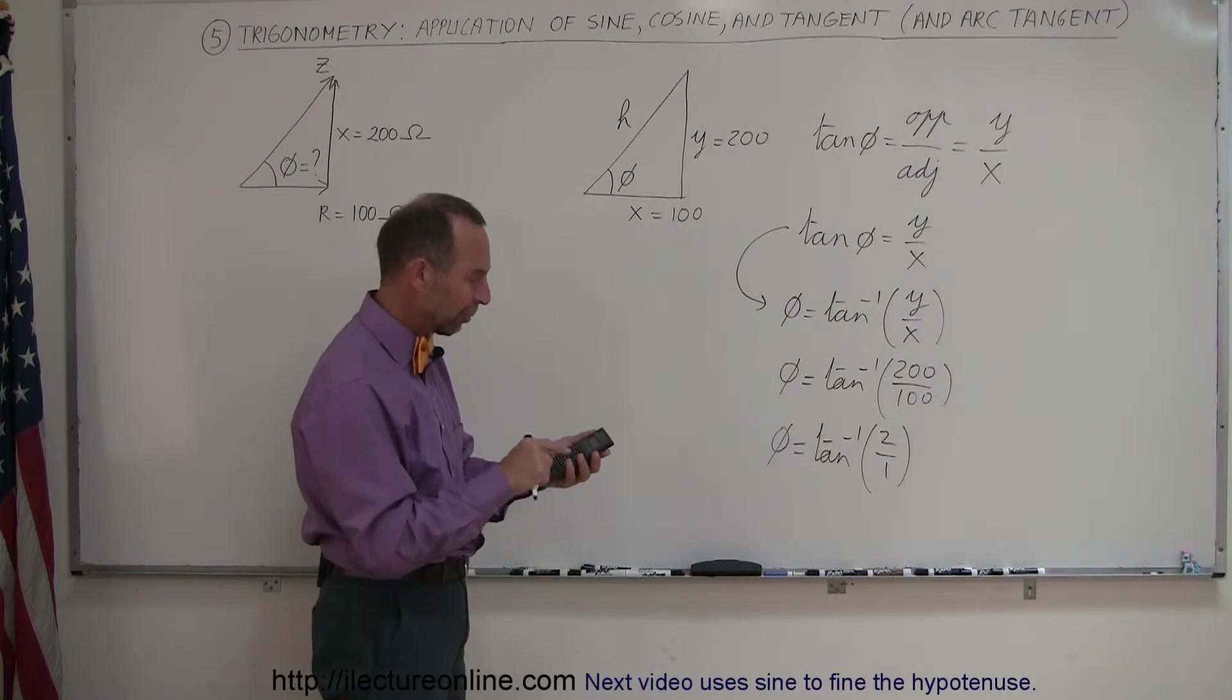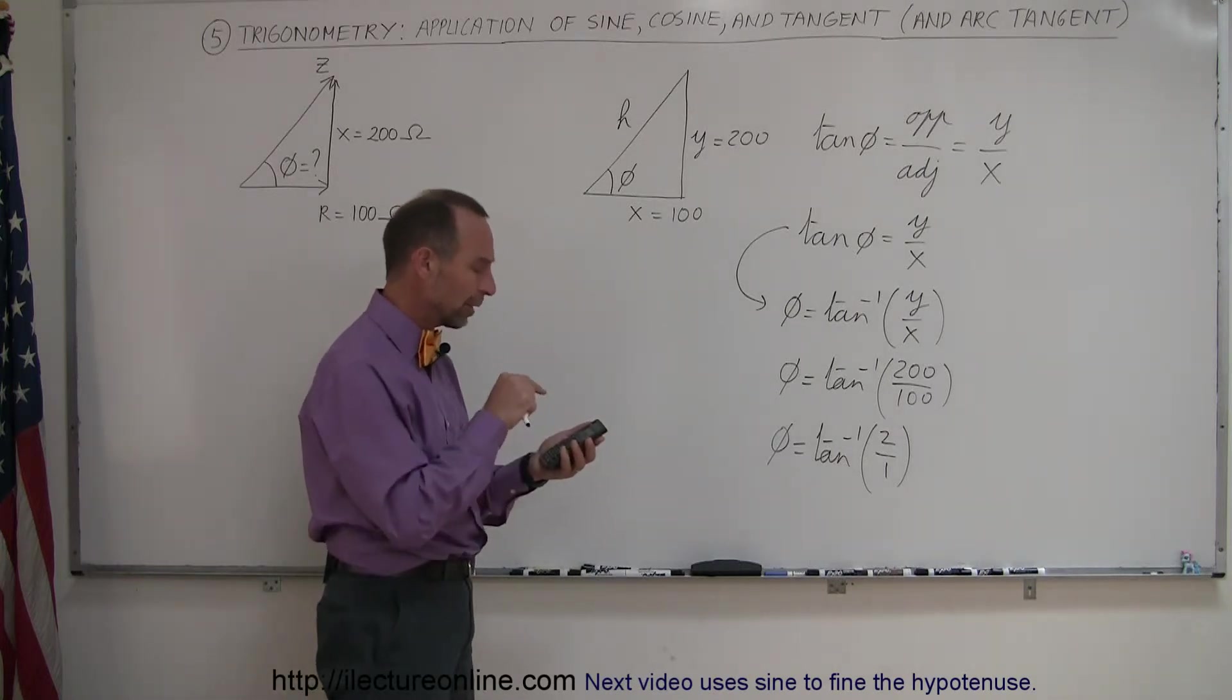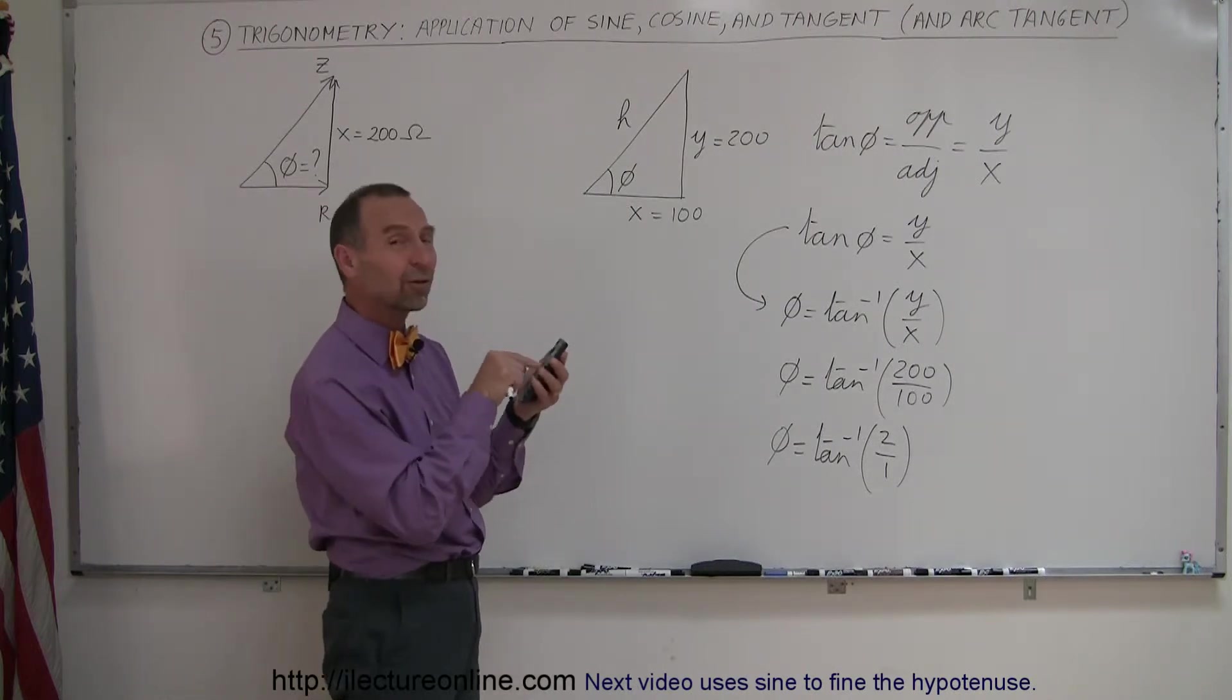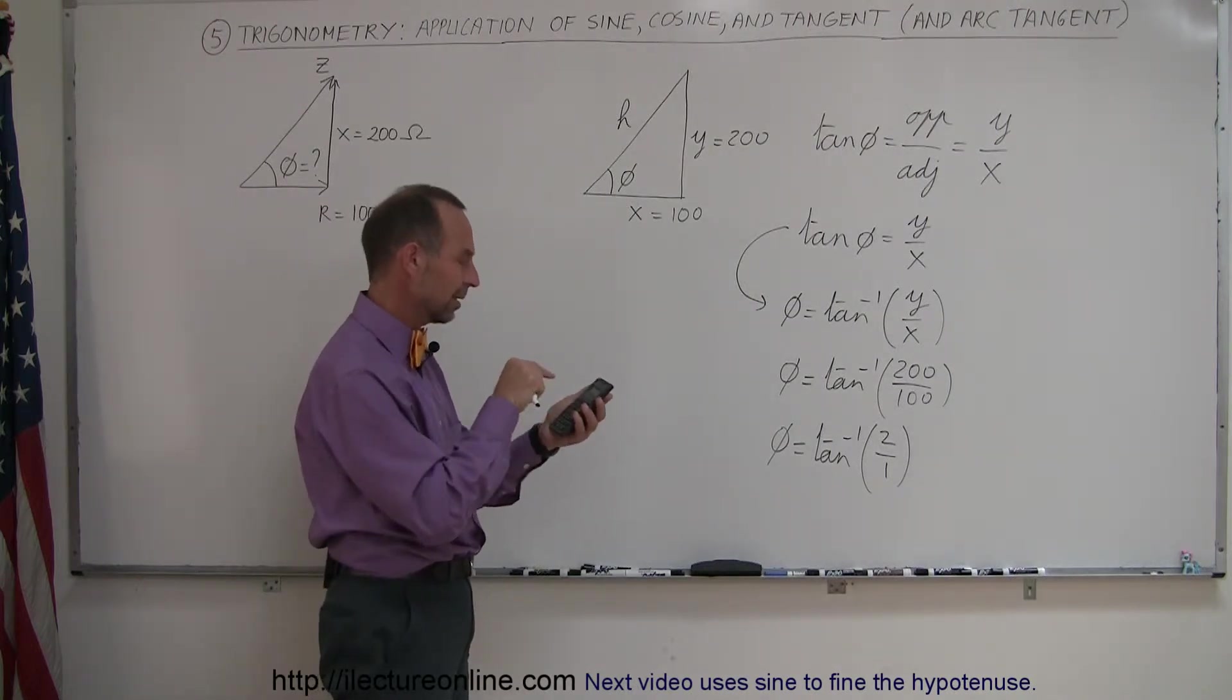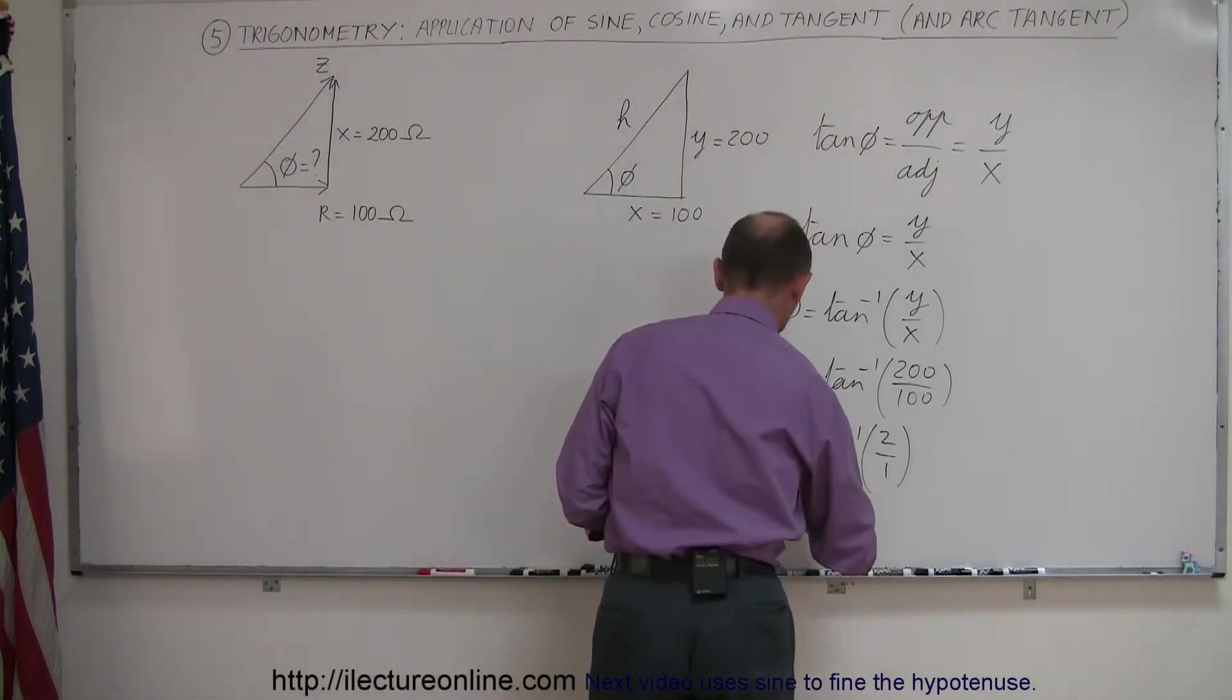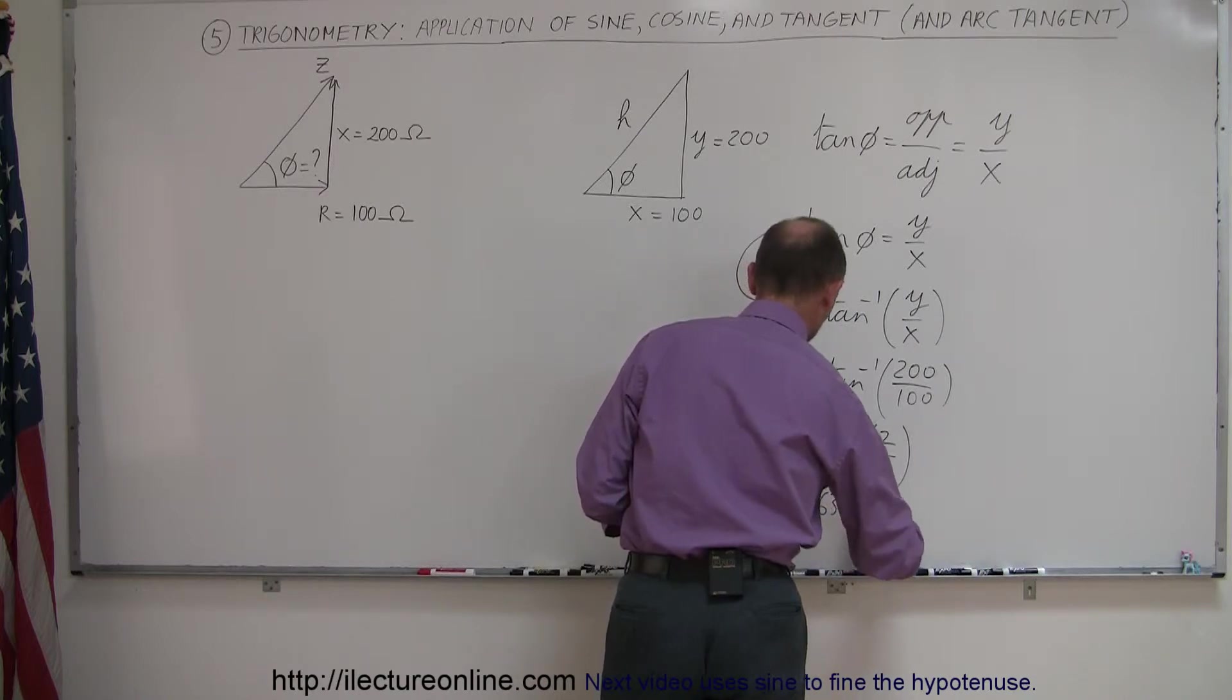And now, instead of pushing the tangent button, you push the shift or inverse tangent button, the second shift, and then you see tangent to the minus 1 in your calculator. Push that button, and out pops 63.4. So that means that phi is equal to 63.4 degrees.